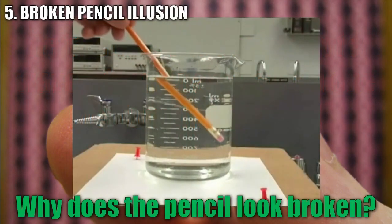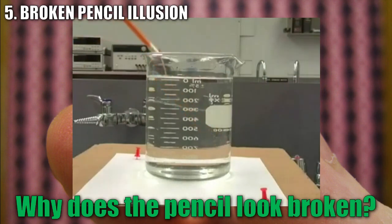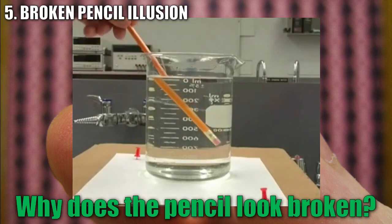When the pencil is placed into the beaker of water, the pencil, for a moment, looks broken. But when we pull the pencil out, we notice it's clearly not broken. So the question is, why does the pencil look broken? What's causing this to happen?